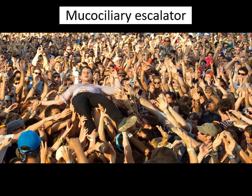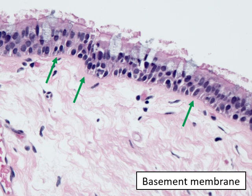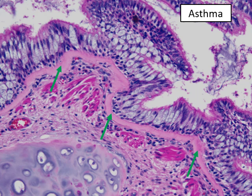The cilia pick up particles and beat so that particles move in one direction. Goblet cells contribute mucus to make this transport easier. The combination of mucus and cilia constitutes the mucociliary escalator, whose function is to move particles up and out of the respiratory tract.